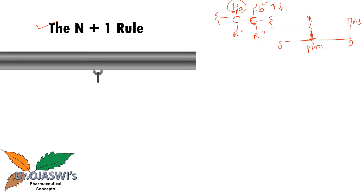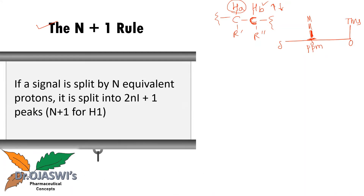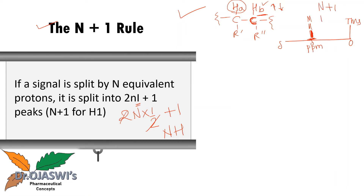If a signal is split by N equivalent protons, it is split into 2NI+1, which equals N+1 for ¹H, since the spin quantum number I is ½ for hydrogen. So if on the adjacent carbon there is one proton, the peak of HA splits into N+1 = 1+1 = 2. Peak of HA is splitting into 2.